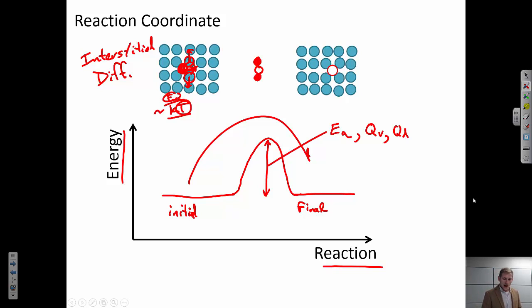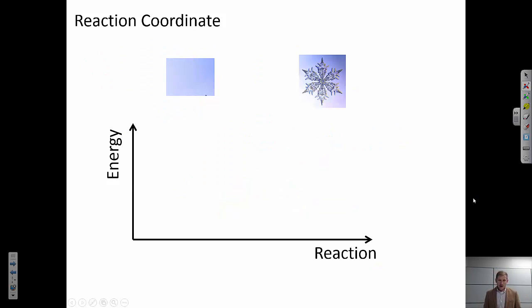So remember this ratio, the activation energy over kT. We could think about another case. In this case, if I'm going from a pure liquid to a pure solid, and if I'm below the freezing temperature of water, then I know the pure solid is the more stable case. And so there's going to be some difference in energy. But I do have to go through some intermediate state.